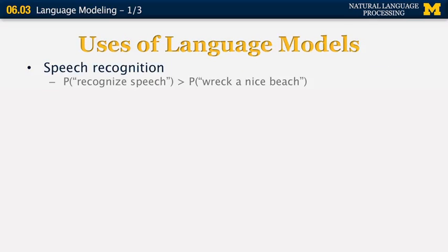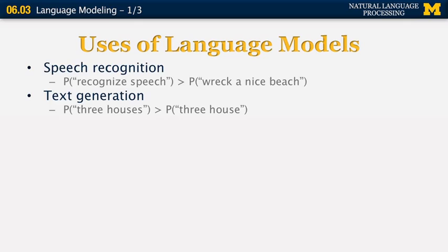So what is the language model again? It's something used a lot in speech recognition. For example, we want the probability of the sentence 'recognized speech' to be significantly larger than the probability of 'wreck a nice beach.' We can also use it in text generation — we want to generate a sentence containing 'three houses' with higher probability than one containing 'three house.'